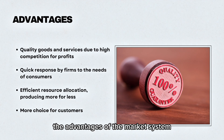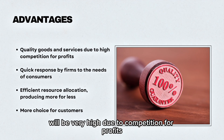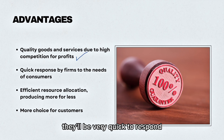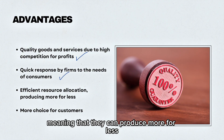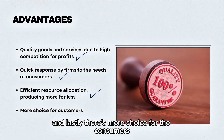The advantages of the market system is that the quality of goods and services will be very high due to competition for profits. They will be very quick to respond to the needs of the consumers. It is highly efficient, meaning that they can produce more for less, for the people who demand it. And lastly, there is more choice for the consumers.